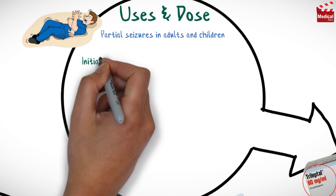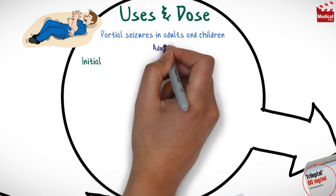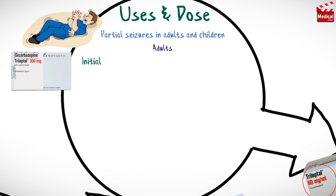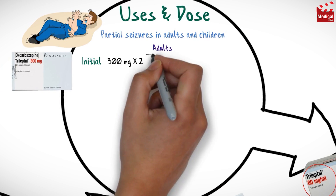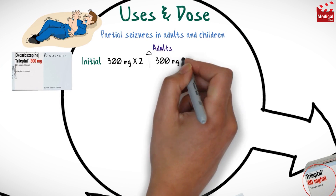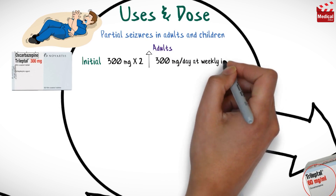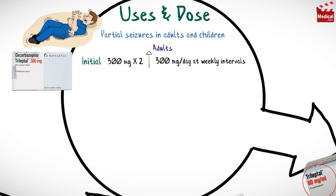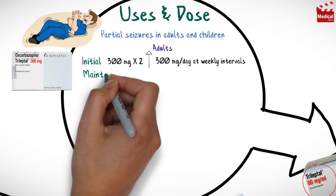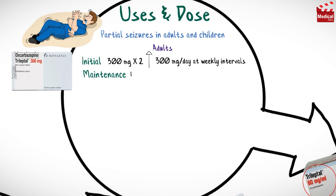The usual initial dose of oxcarbazepine for adults is 300 mg twice a day, increasing in increments of 300 mg per day at weekly intervals to effective dosage. The usual maintenance dosage is 1,200 to 2,400 mg per day in 2 divided doses.